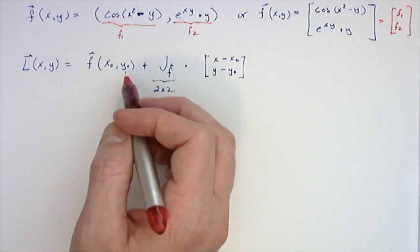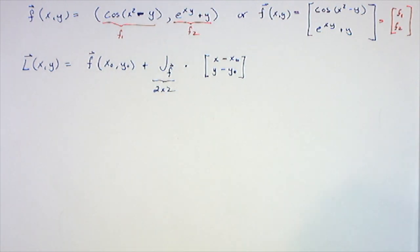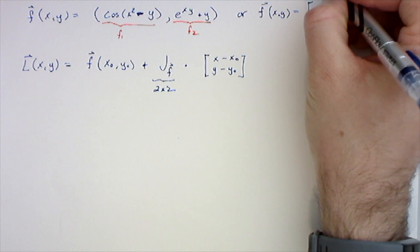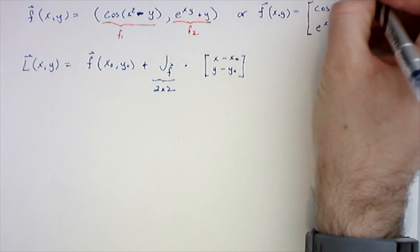The vector-valued function f evaluated at the point x₀, y₀. My x₀, y₀ is going to be (0, 0), so this is the linearization of the vector-valued function at (x₀, y₀) equal to (0, 0).